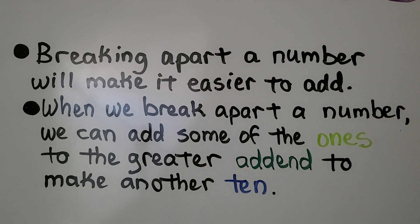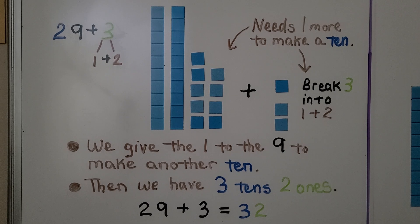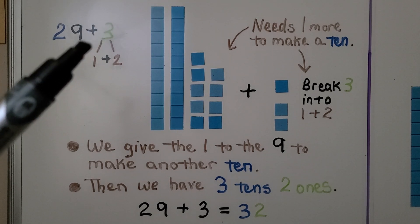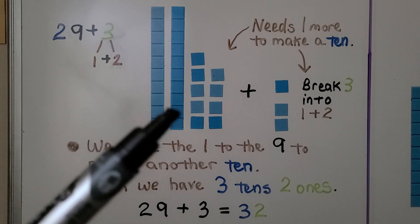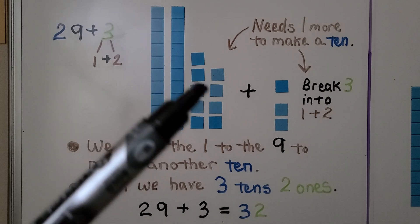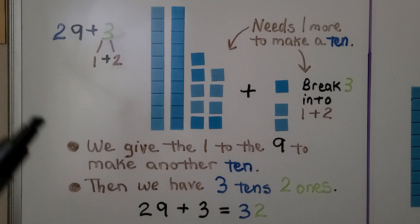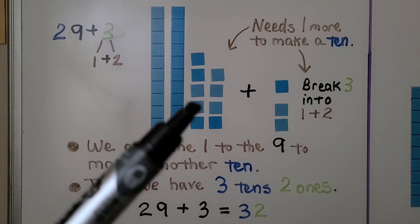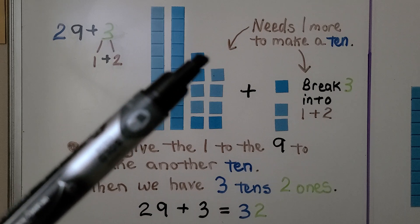So let me show you how this works. If we need to add 29 plus 3, we have 2 tens, 9 ones, and we think, 9 ones needs one more to make a ten.